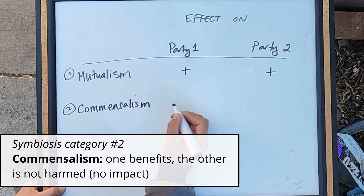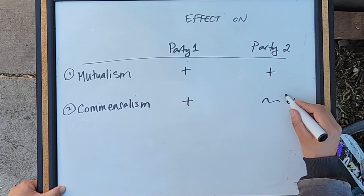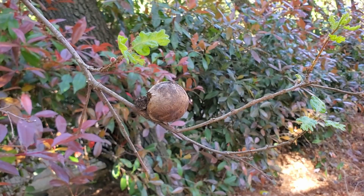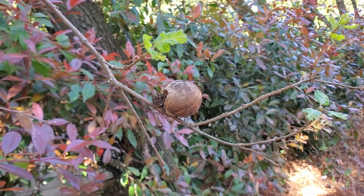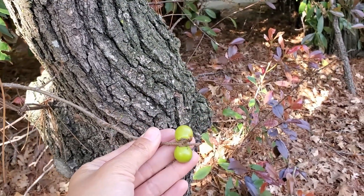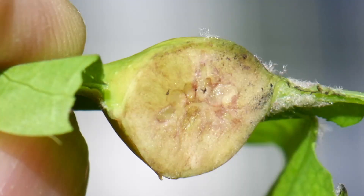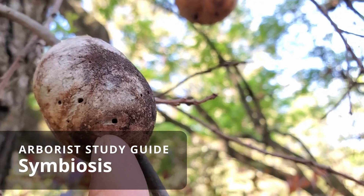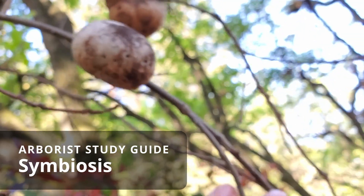The second type of symbiotic relationship is where one benefits but the other is not harmed — this is called commensalism. An example is oak apple galls. Valley oaks, Quercus lobata, always have these apple-looking growths called galls. Galls are formed when a wasp lays its egg in the developing tissues of the tree, triggering the tree to create a gall structure. The egg is inside the gall, and the larvae are able to develop protected by it. The wasp really does benefit, and for the most part it doesn't affect the tree.